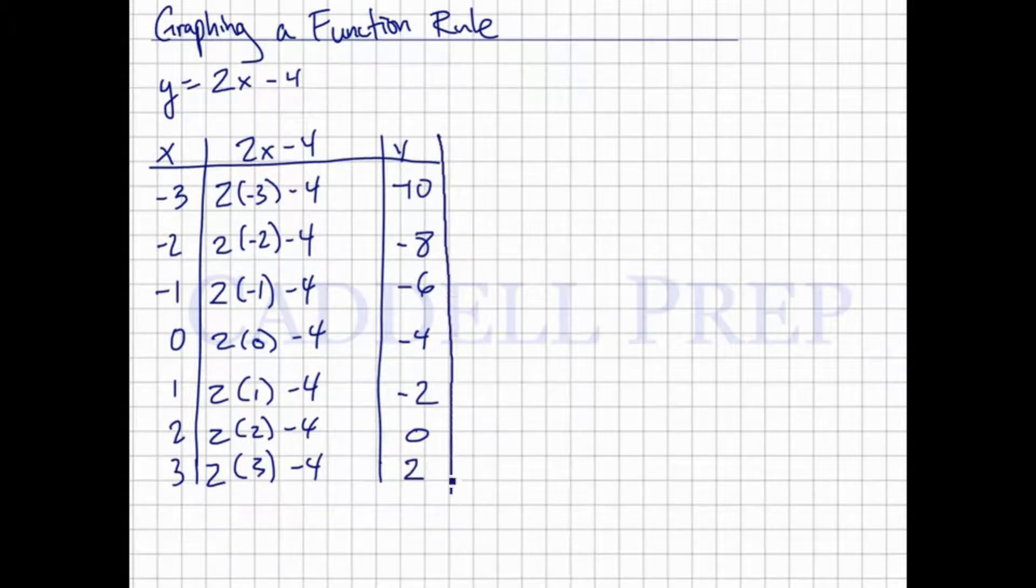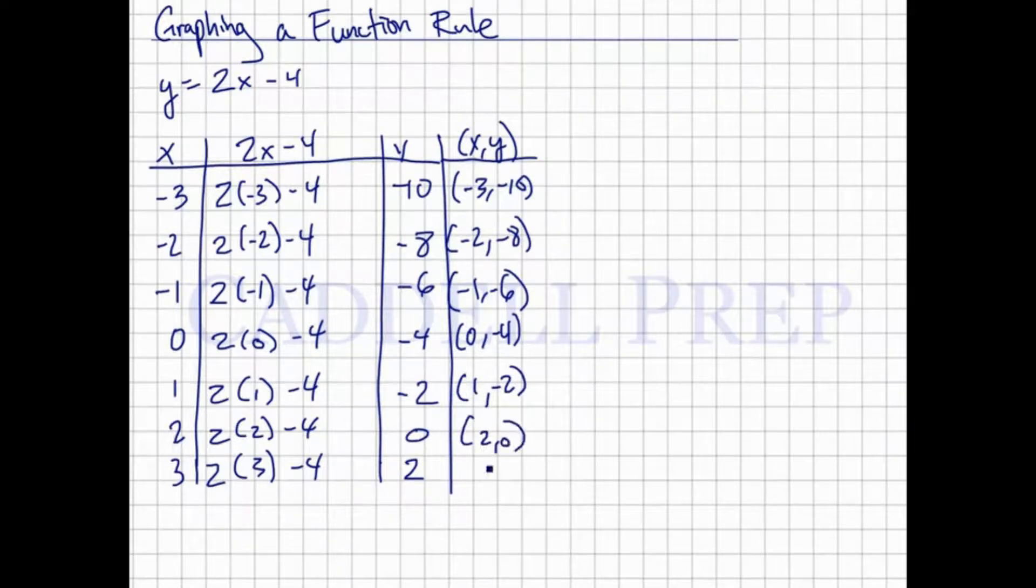So let's make another column for our coordinates, x, y. So when x is negative 3, y is negative 10. So we have negative 3, negative 10. Negative 2, negative 8. Negative 1, negative 6. 0, negative 4. 1, negative 2. 2, 0. And 3, 2.